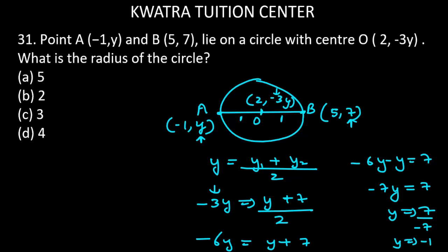So what will we do? We will take radius of the circle now that we know the value of y. We will take the distance between O and A, or you can take O and B. The answer will be the same.